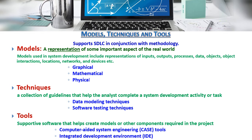Models, techniques, and tools support the system development lifecycle in conjunction with methodology. A model is a representation of some important aspect of the real world. Models used in system development include representation of input, output, process, data, object, object interaction, location, network, and device — graphical, mathematical, and physical. Techniques are a collection of guidelines that help the analyst complete system development activities, like data modeling and software testing techniques. Tools are support software that help to create models or other components required in the project, like computer-aided software engineering tools, integrated development environments.